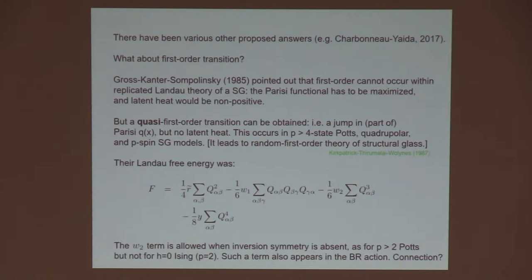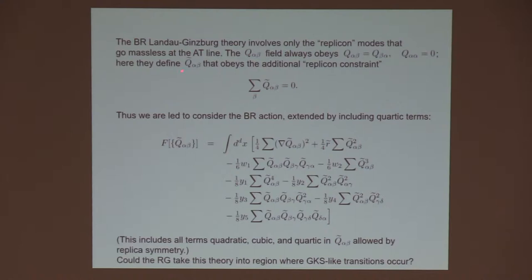The Bray-Roberts action is a Landau-Ginzburg theory, similar to what I just had, but there's a difference. The Q alpha beta field has this additional constraint so that we get into the subspace of the modes that are massless on the Almeida-Thaulis line. We call these Q tilde, and they have the property that when summed over either index, we get zero. I'm going to include quartic terms in the Bray-Roberts action. There were five distinct terms allowed by the replica symmetry, taking account of this constraint. So the question is, if we think about renormalization group, could it be that the RG flows will take us into a region where these GKS-like transitions can occur.